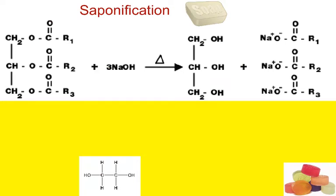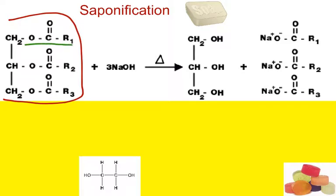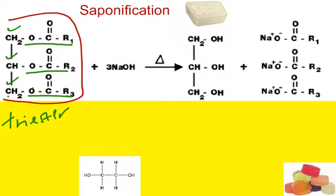Saponification, on the other hand, is a matter of recognition. They don't typically ask you to draw this structure right here — it's not that hard to draw, but I've never seen a question asking you to draw it. If you look carefully, you'd notice that this structure has three ester groups — C double bond O with carbons on both sides — attached to these three carbons right here. So this is typically called a triester, or triglyceride, and triglycerides are fats.